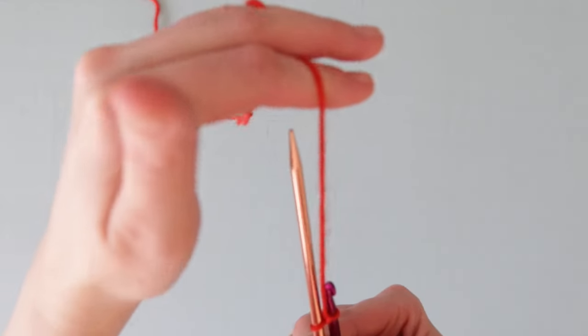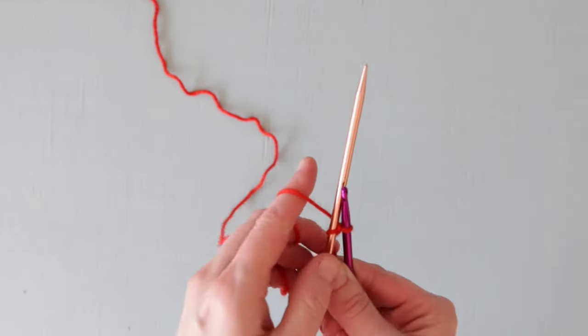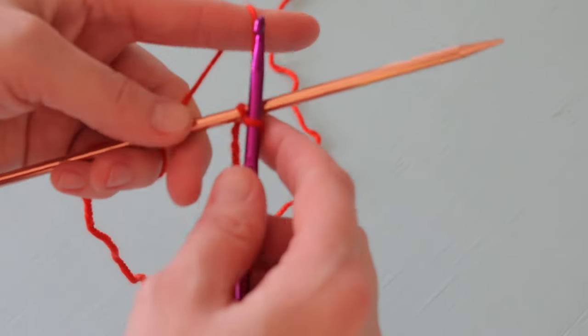Next we're going to bring our working yarn in between the hook and the needle and around the back of the needle. Then we're going to hook that yarn and draw a loop through the other loop on our hook.